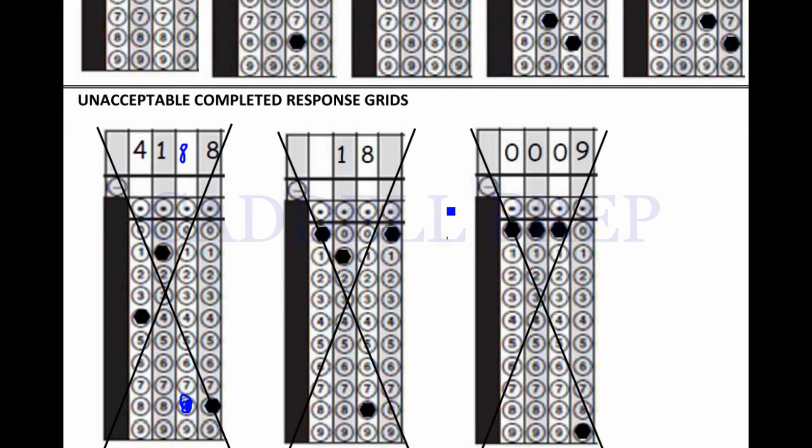So, this would be wrong. Also, for 18, do not start in the middle. Start here on the left. Don't add a 0 in front. Don't add a 0 after. It should just be 18 and then 18 bubbled in.